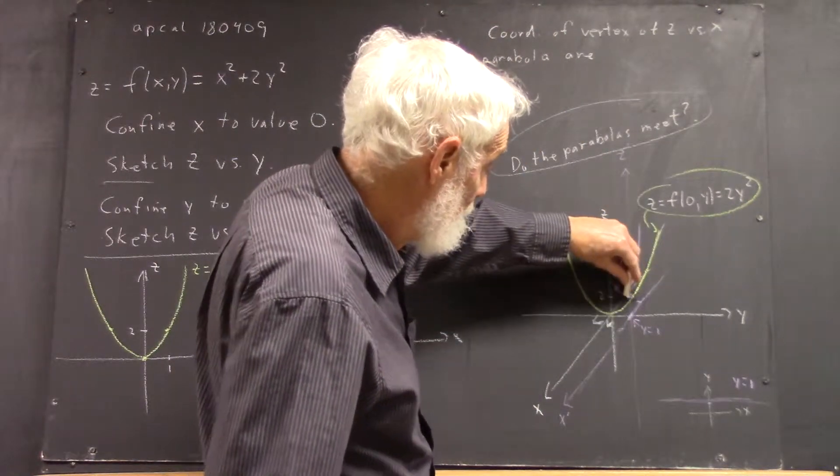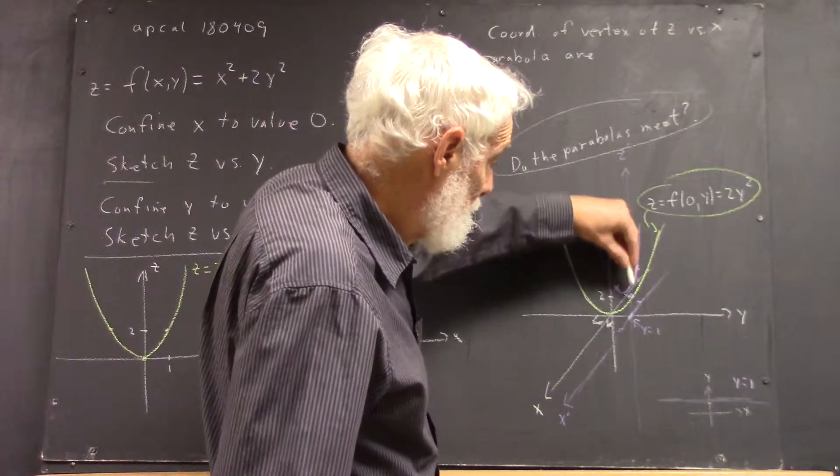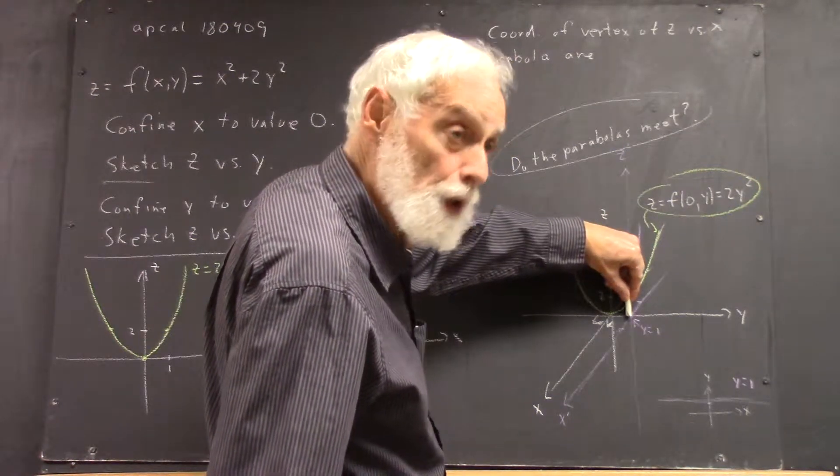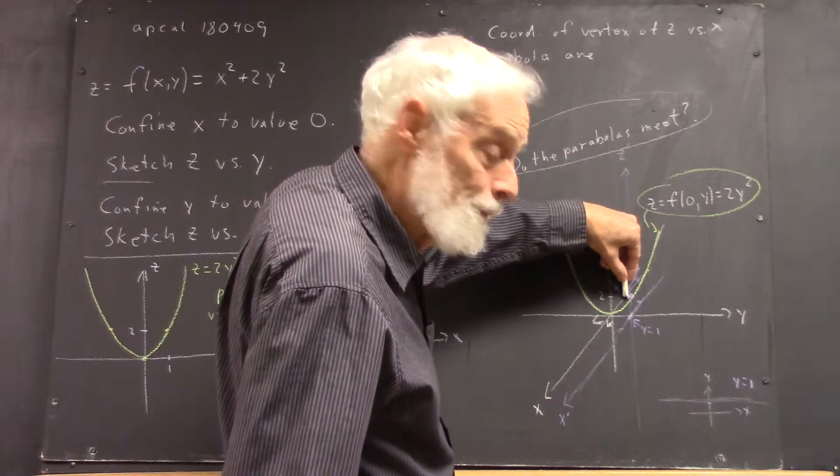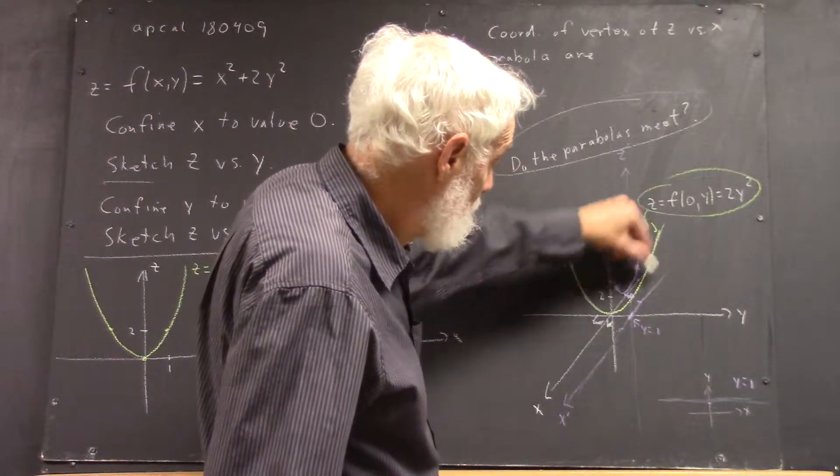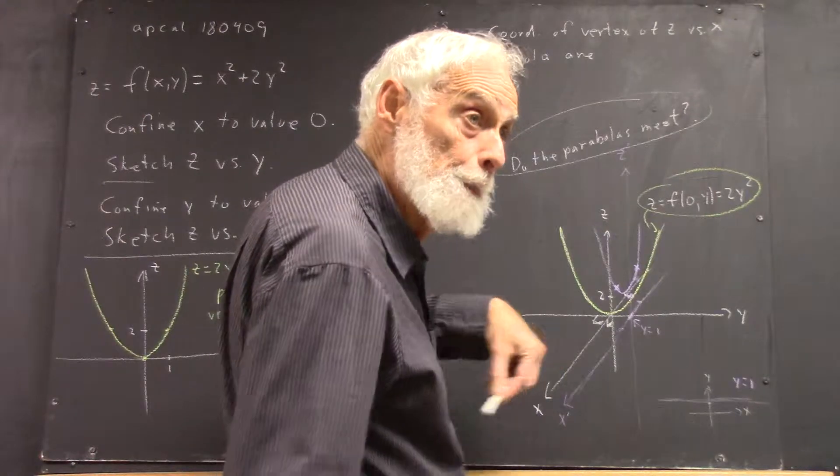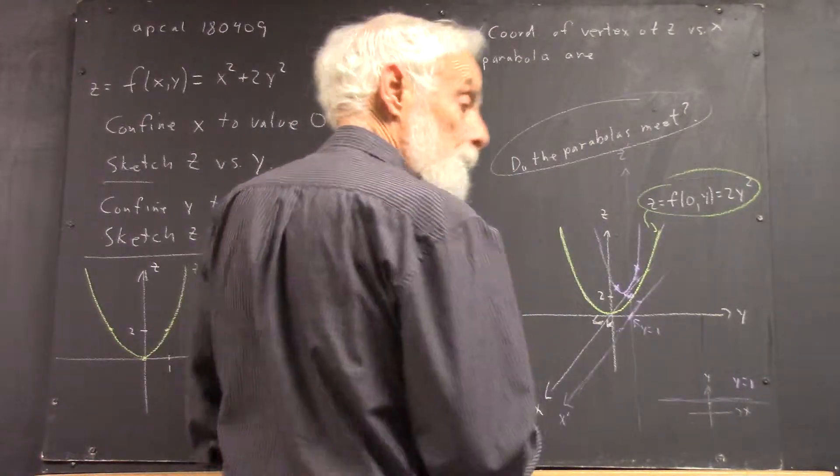We can see that at this point this is directly above the y-axis, right? So the y-coordinate is zero. It's directly above the line where x equals one, right?